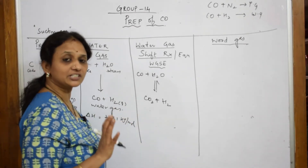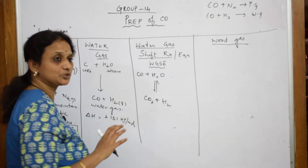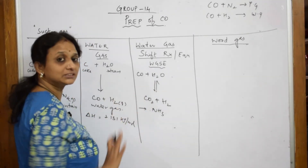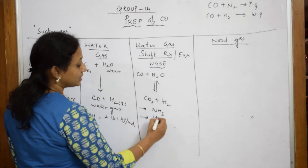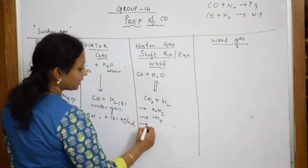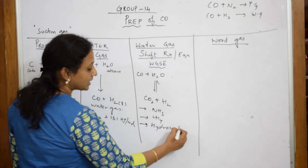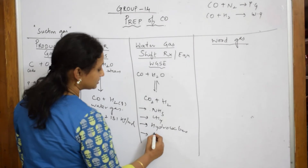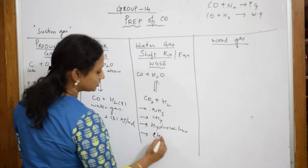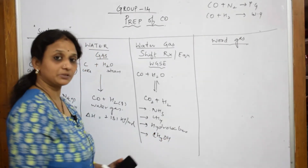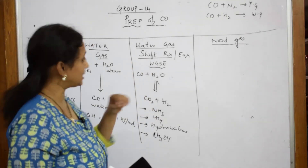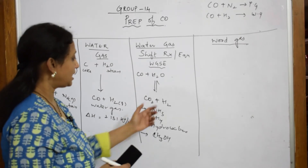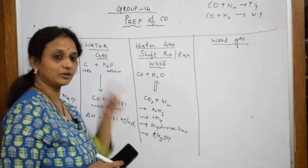This water gas shift reaction is basically used to prepare a number of compounds. For example, I can prepare ammonia from this. I can prepare methane using this. I can prepare hydrocarbons using this. I can also prepare methanol — CH3OH — from this. Because of this equilibrium state reaction — carbon monoxide plus water, reversible reaction — I can use this technique for preparing many compounds.